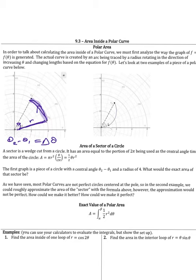If you remember in the rectangular world, what we did when we were finding the area under a curve is we thought about it in terms of Riemann sums. We thought about breaking up little individual rectangles and adding the area of all of those rectangles together. The problem here is that we aren't going to have rectangles that go down to the x-axis. In fact, we don't even have an x-axis — we have an r and a theta. What we can do instead is think about individual sector areas.